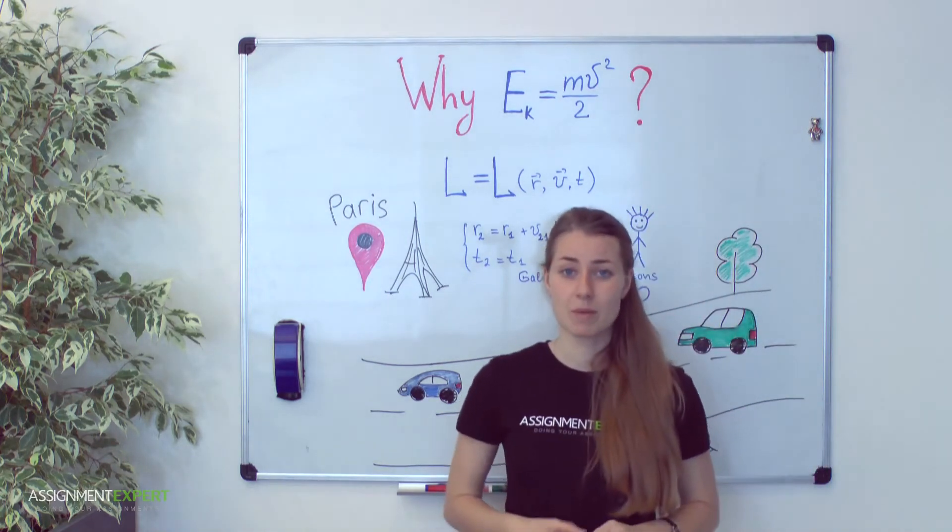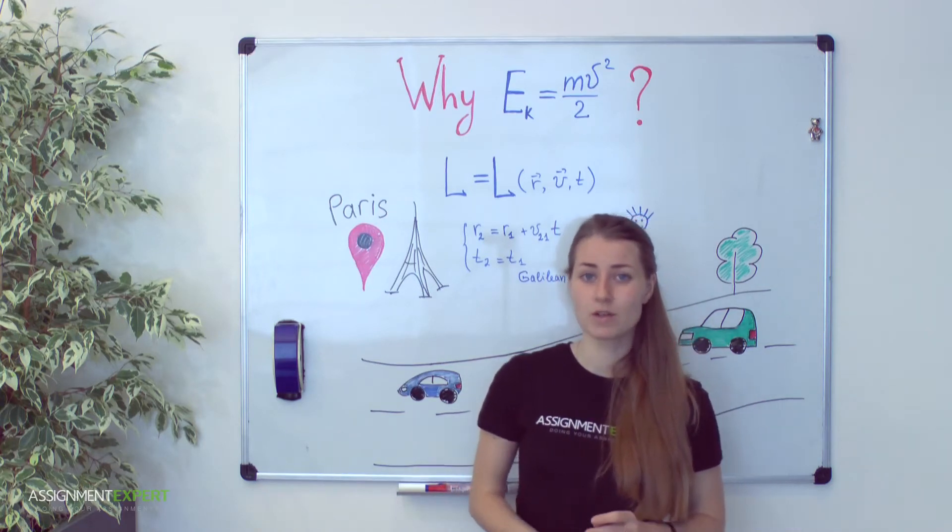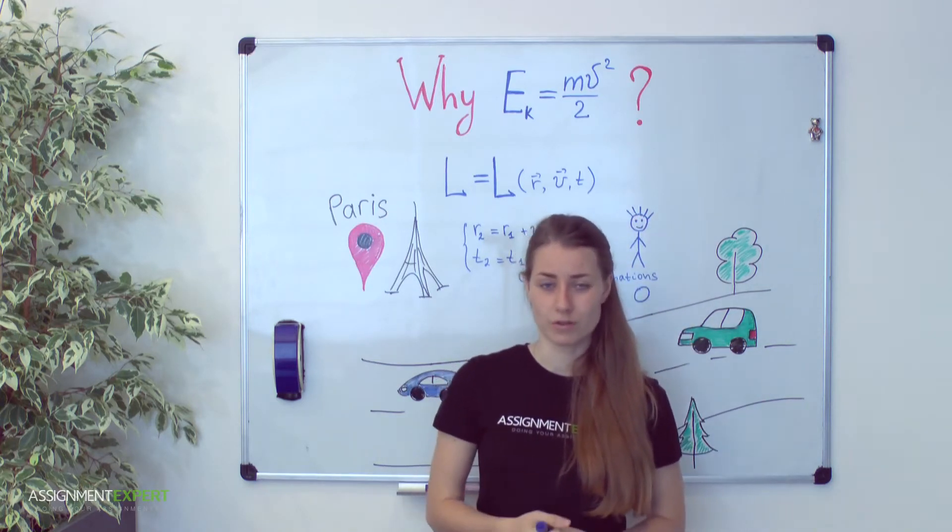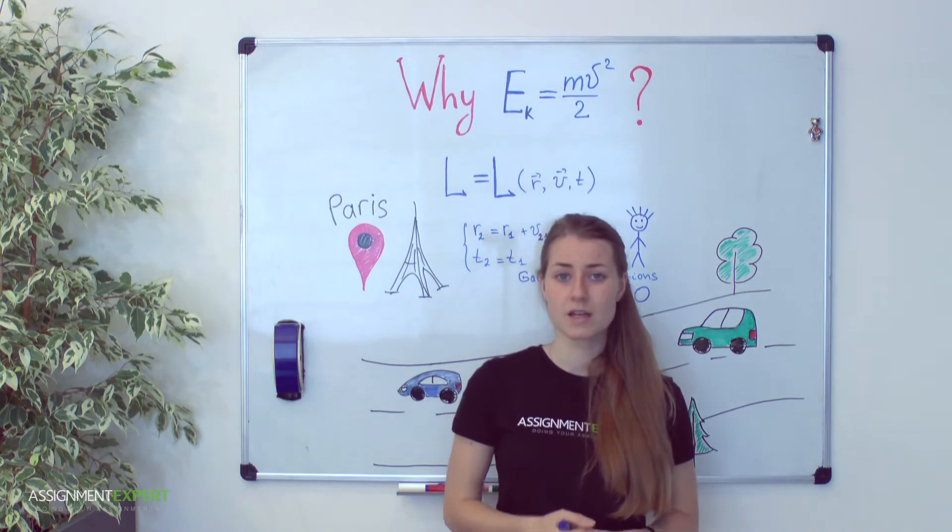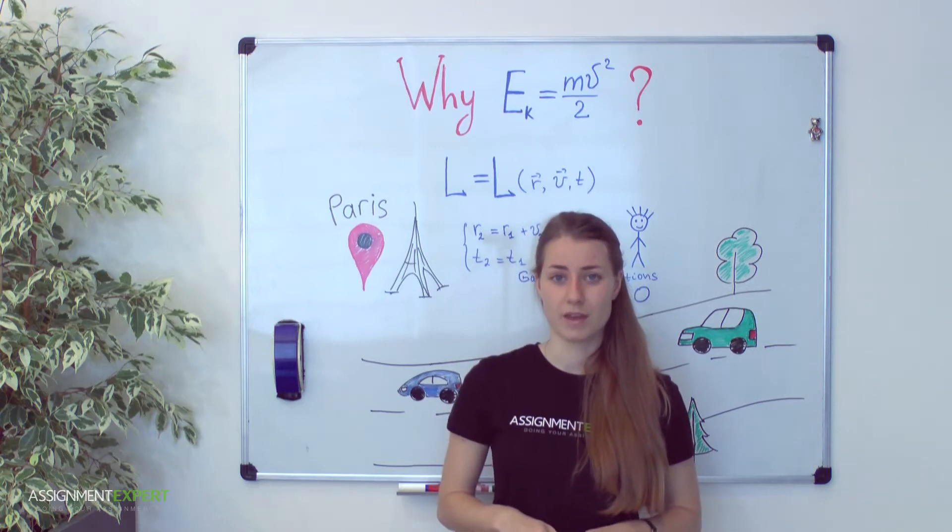You know that our space is homogeneous and isotropic. Therefore physically it doesn't matter where to choose the origin of coordinates because all the points of space are the same. To put some clarity inertial reference frames appear in the game.